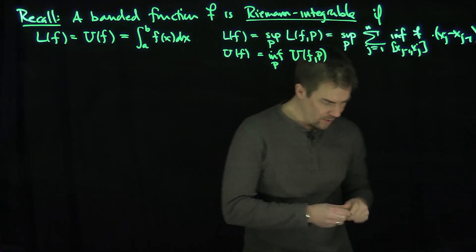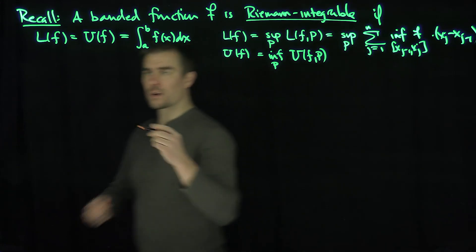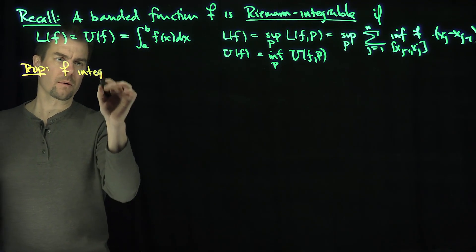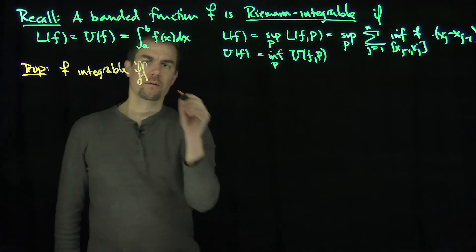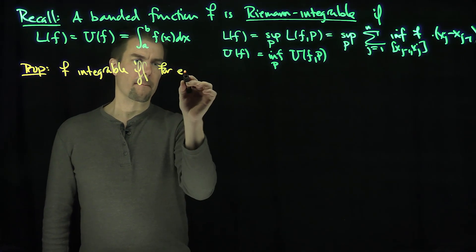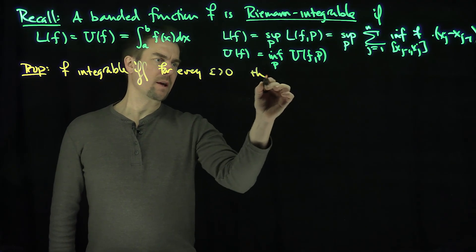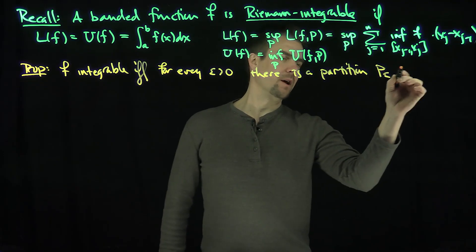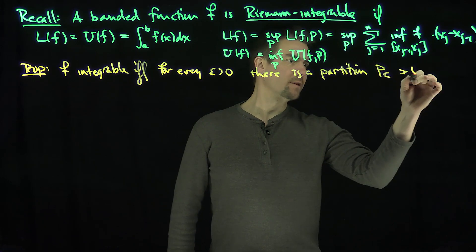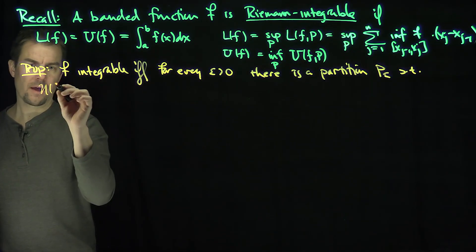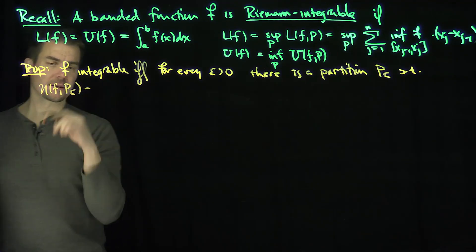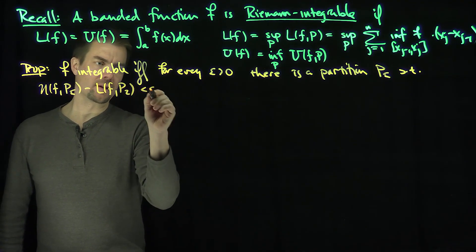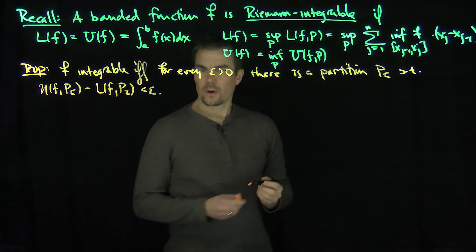And so we'd like to prove the following proposition. F is Riemann integrable if and only if for every epsilon, there exists a partition P_epsilon such that U(f, P_epsilon) minus L(f, P_epsilon) is less than epsilon.